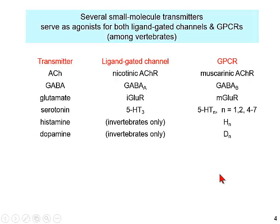Several small molecule transmitters serve as agonists — they activate both ligand-gated channels and G-protein coupled receptors (GPCRs) among vertebrates. The situation gets even more complex for invertebrates, because some invertebrate neurotransmitters have the same function: they activate both types of receptor.